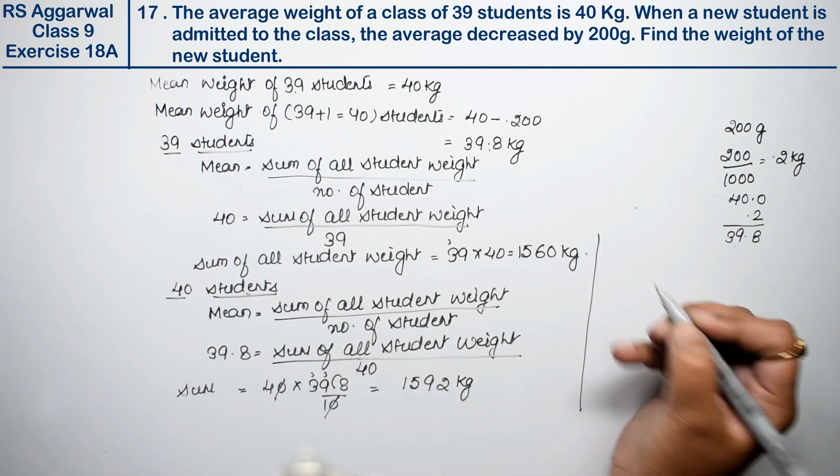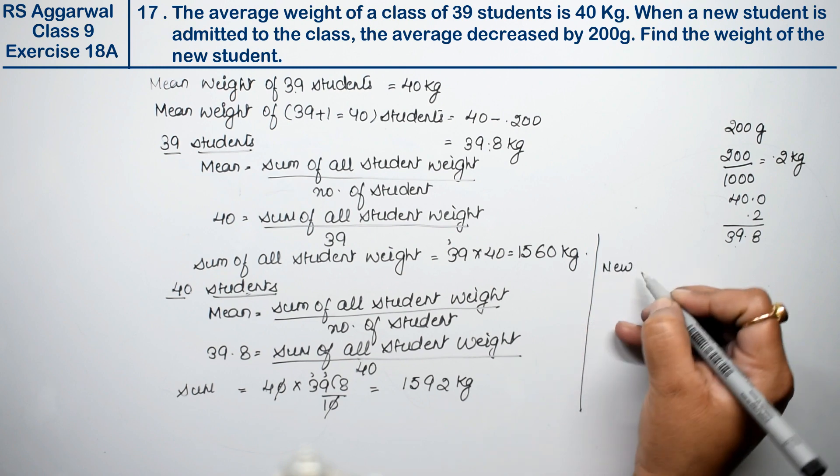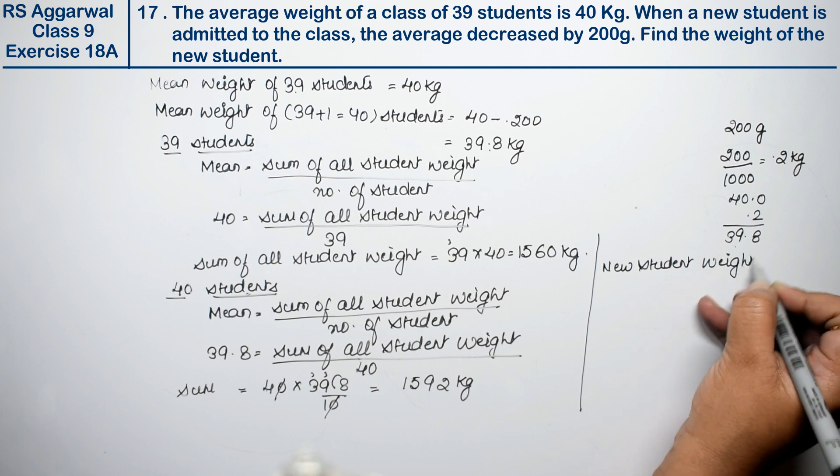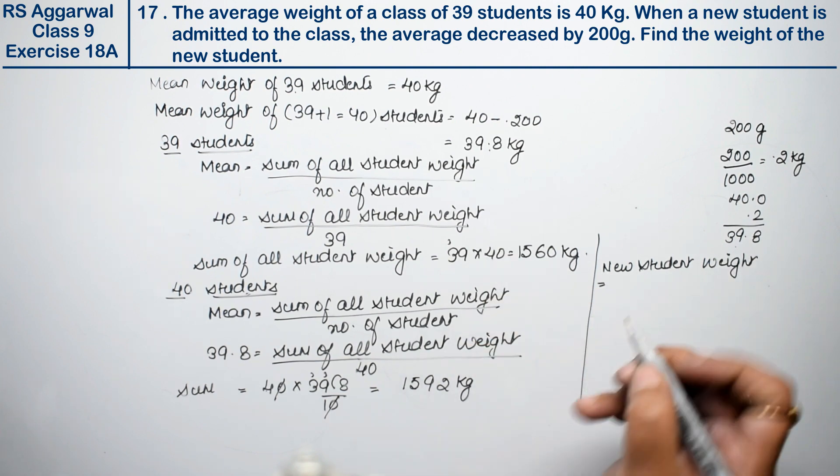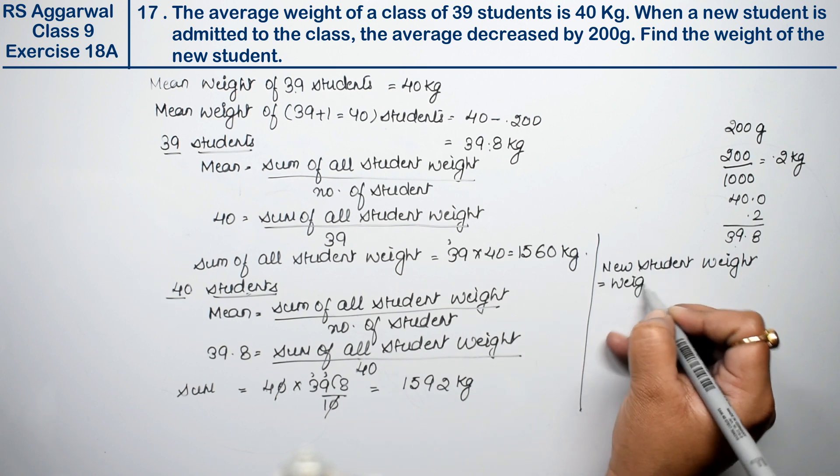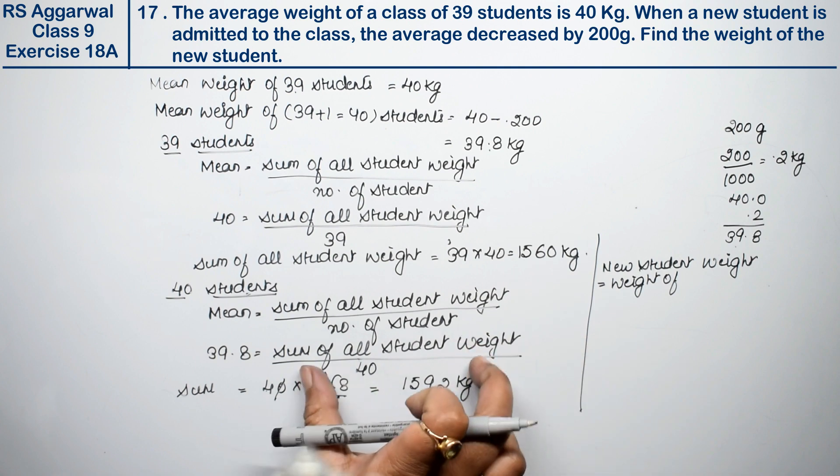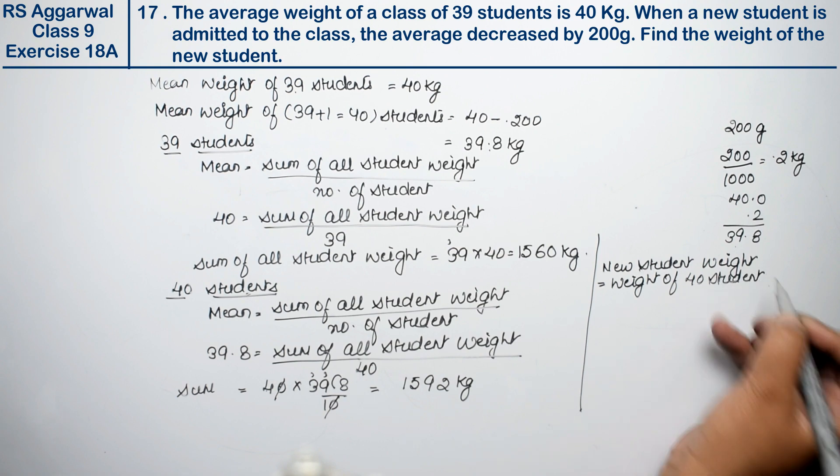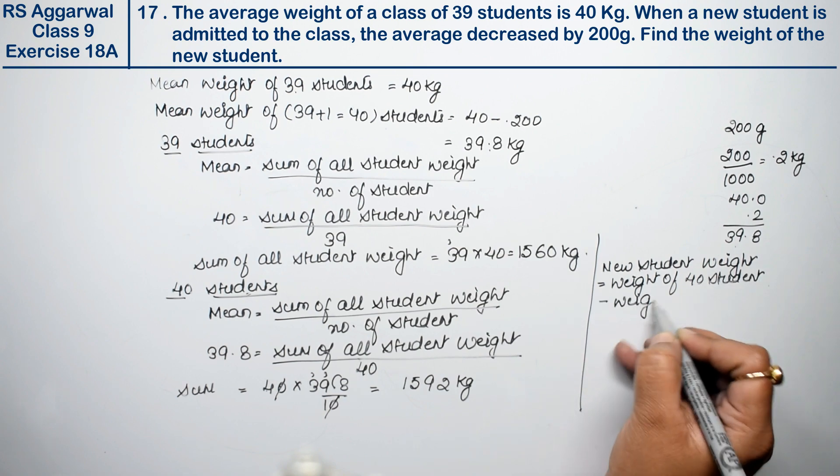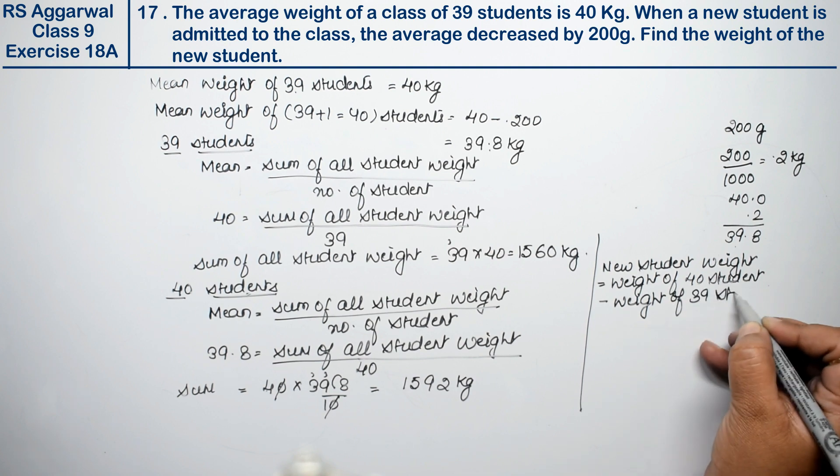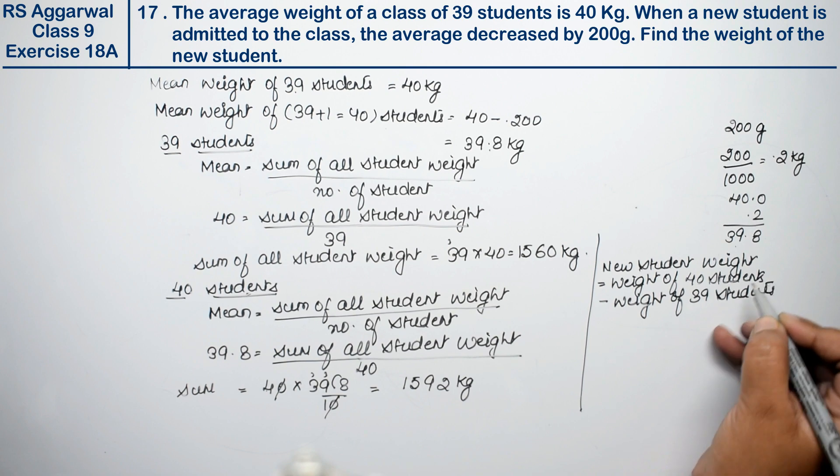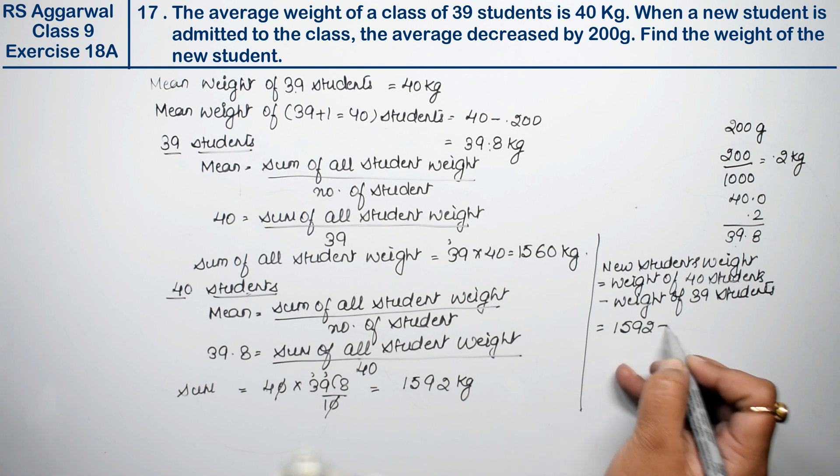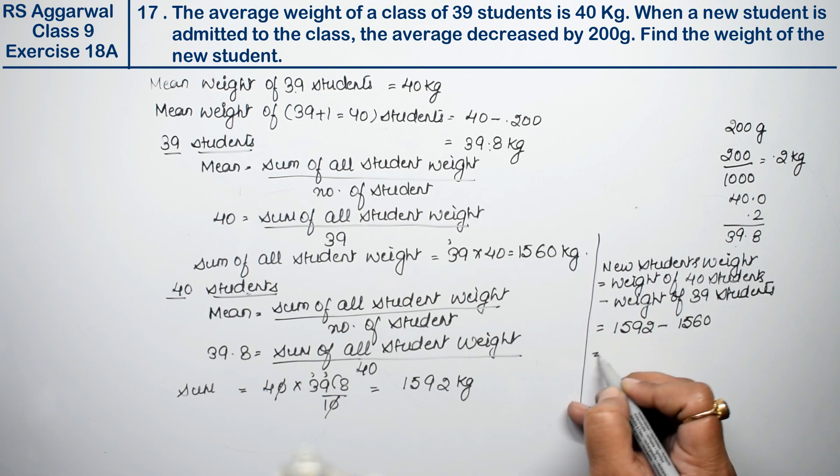Now how will we find the new student's weight? See, new student weight equals weight of 40 students minus weight of 39 students. So this comes to: 1592 minus 1560. That gives us 32 kg.